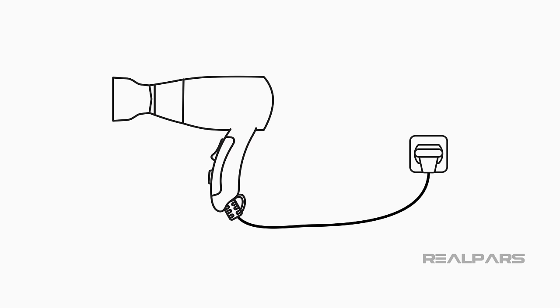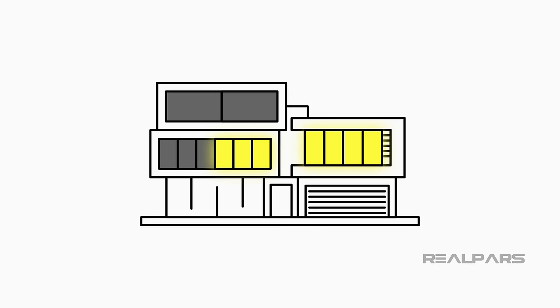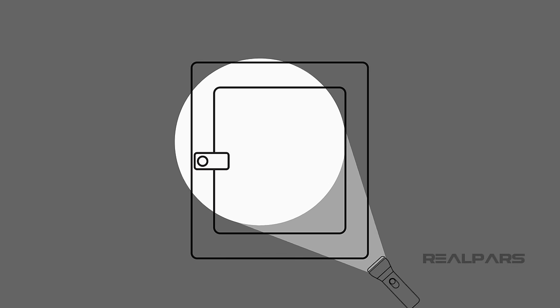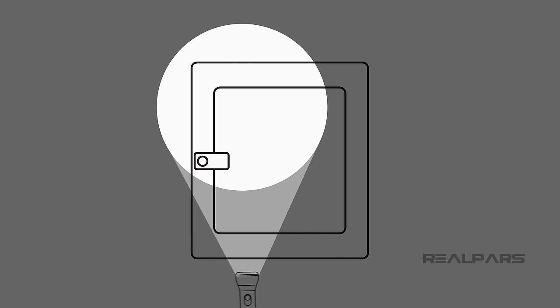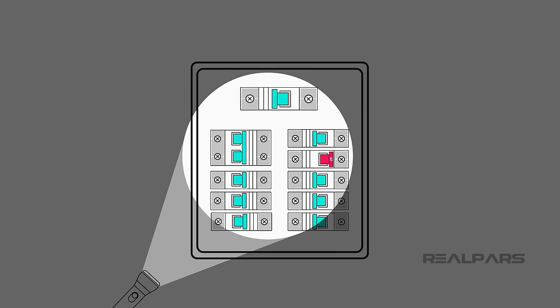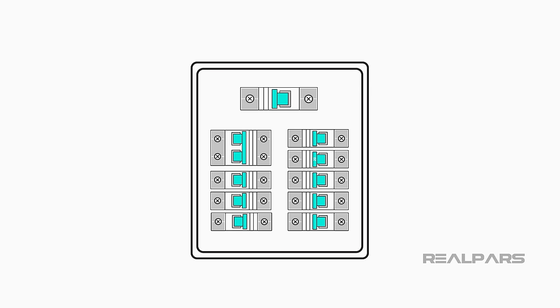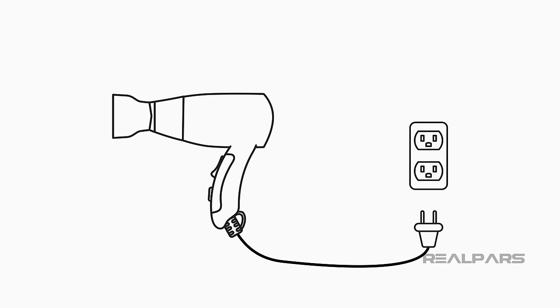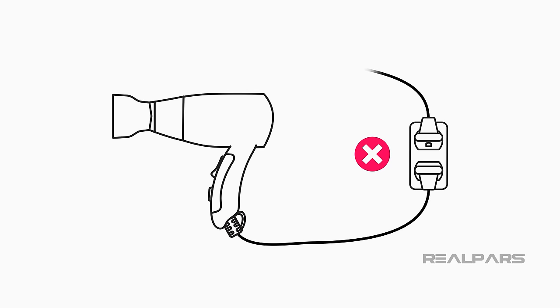Have you ever plugged in a blow dryer and suddenly BOOM, half of your house is now in the dark without any power? You then go to the drawer where you keep your flashlights and find the electrical distribution panel, which is usually hidden somewhere behind a door or in your basement. You locate the one switch that looks different than the others and flip it, and magically you have light again. After that, you know better than to turn on that blow dryer with everything else plugged in at the same time. But why is that? What actually caused that to happen?